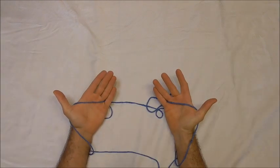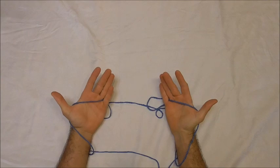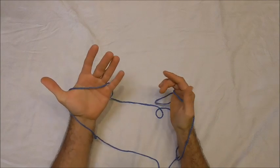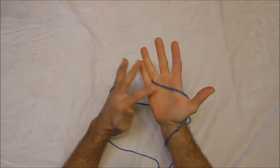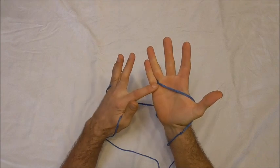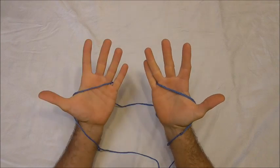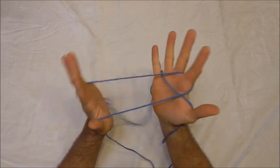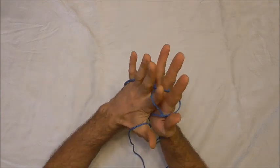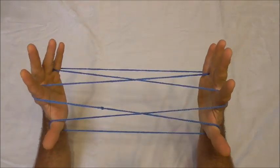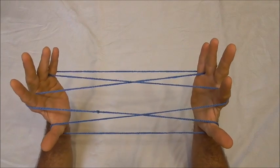I'm starting off with a loop of string that is around about one meter or three feet and I'll just start off with the loop of string across the palms in between the little fingers and thumbs and I'm going to pick up the palm strings with my pointer fingers to do opening A.